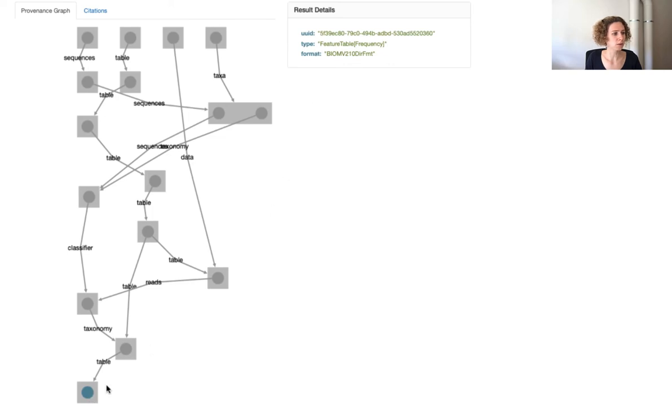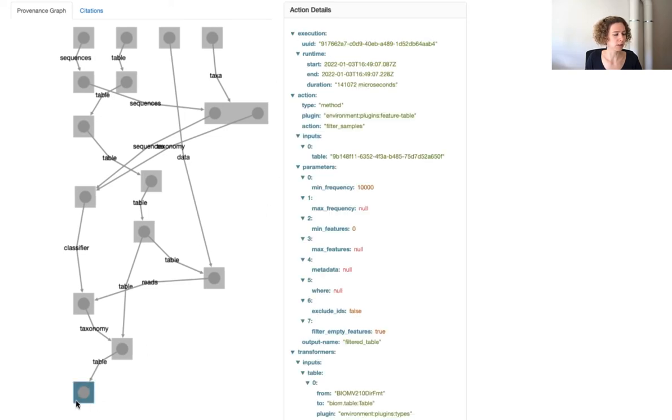So here, for example, this is our feature table, and we can see by clicking on this square here that the last method that was applied was to filter it. And we see, we learn so much from it, like we know when it was generated, how long it took.